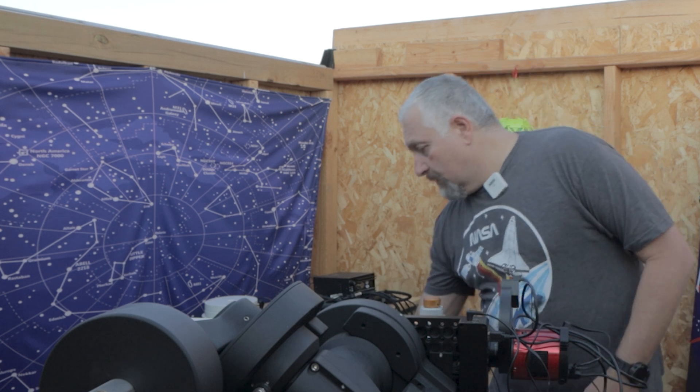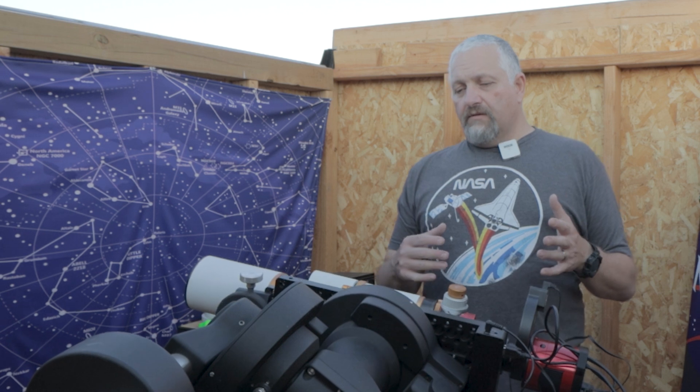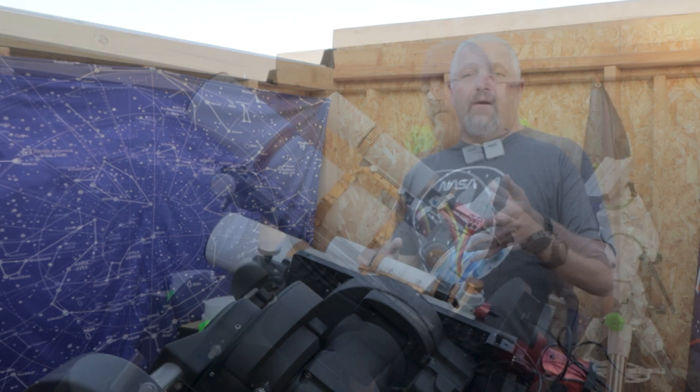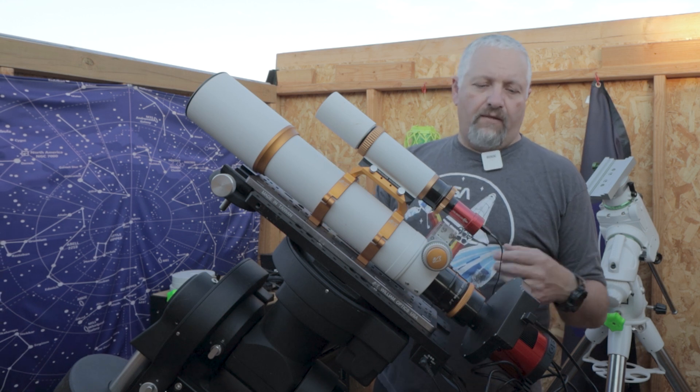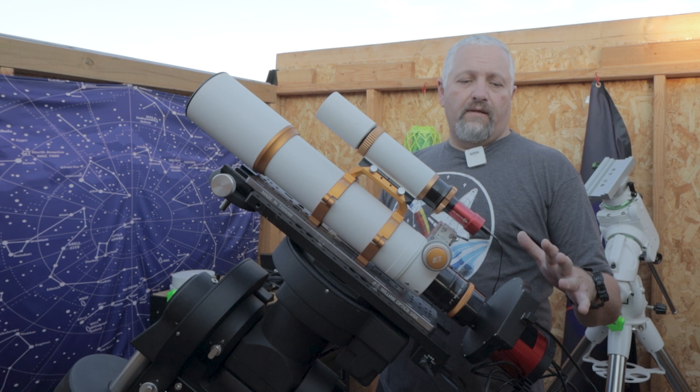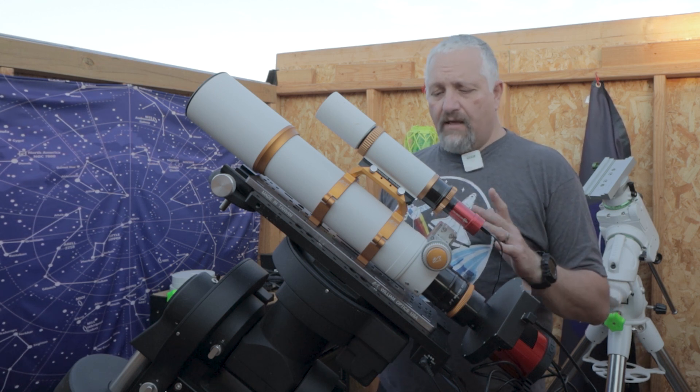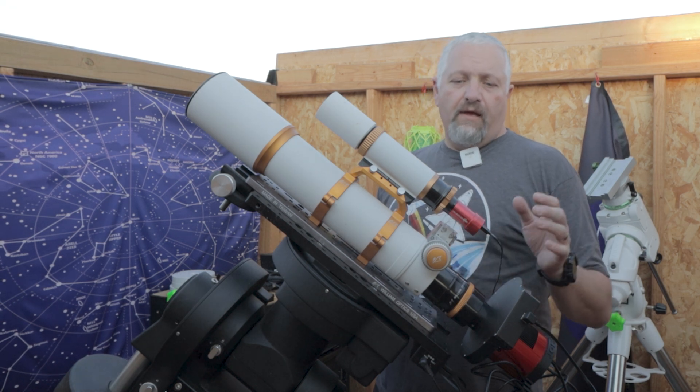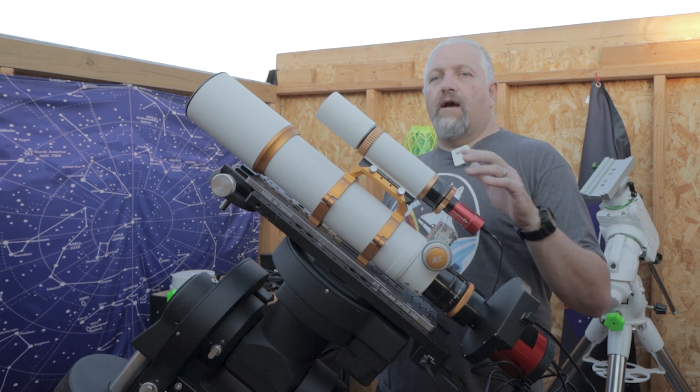So tonight I'm going to be using the CEM 120 mount, the Z81 William Optics, and the 2600 MM Pro with Antlia filters, the 36 millimeters. I've got the ZWO EAF and also a 120 mini on the William Optics Auto Guider.